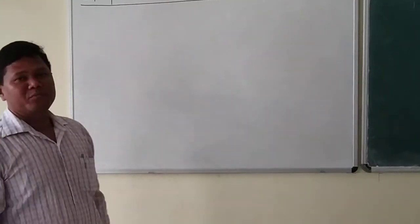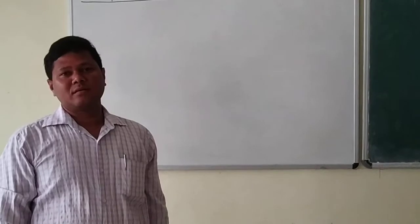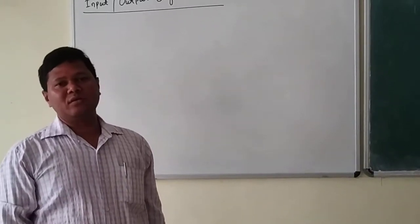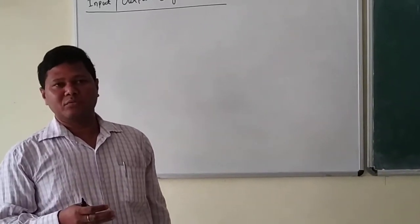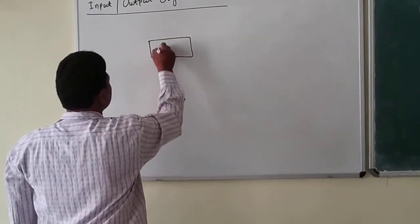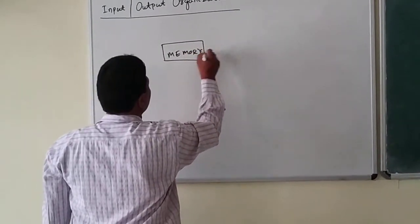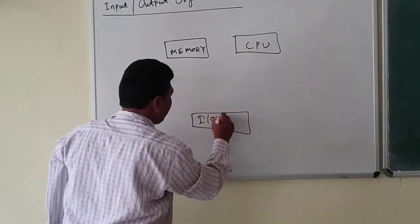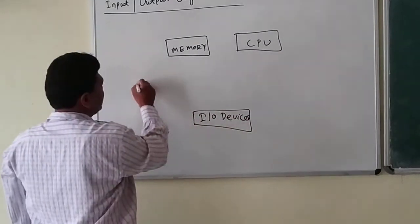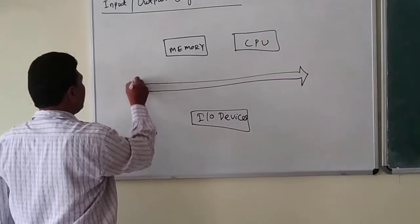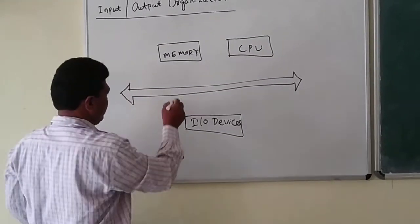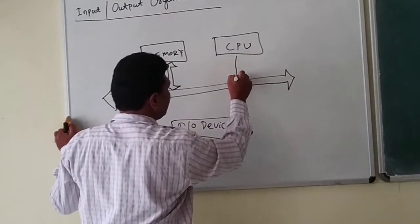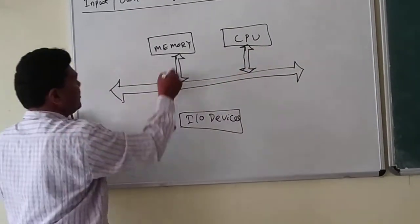We have to discuss about input-output organization. As per the von Neumann concept, a computer system must consist of memory, input-output devices, and CPU. The general construction connects these components together, with the CPU accessing memory by addressing it through the CPU bus.